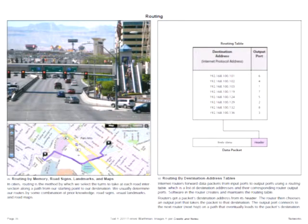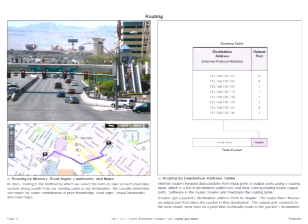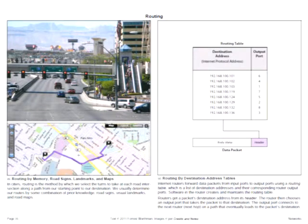Routing in cities is done by a combination of looking at road signs, visual landmarks, memory, and road maps. On the right, there is a routing table used by a router, created with sophisticated software techniques. It is able to map any destination address on the internet to a particular output port on the router. The router looks at the header of arriving packets, which contains a destination address, and assigns an output port to each packet.